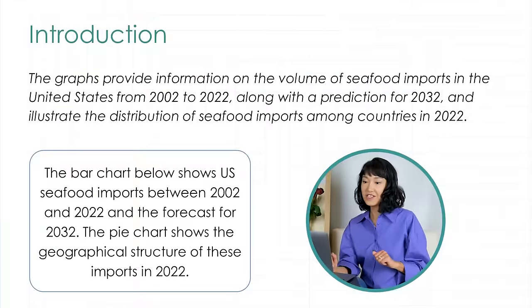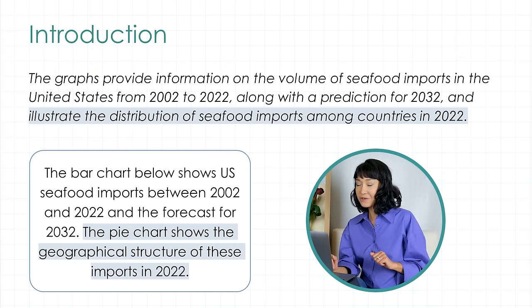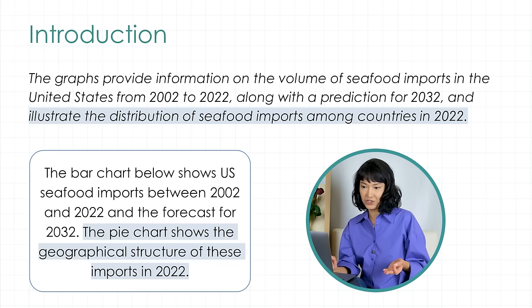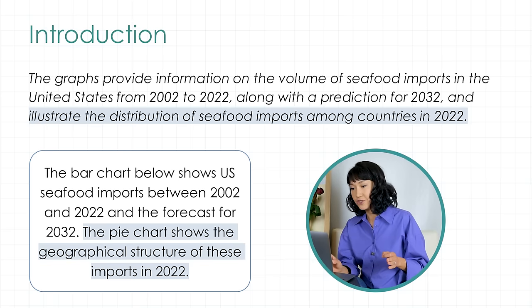Now the second. The task reads: 'the pie chart shows the geographical structure of these imports in 2022.' And I wrote: 'the graphs illustrate the distribution of seafood imports among countries.' So 'the geographical structure' becomes 'the distribution among countries.' In my introduction, I paraphrase the task sentences but kept the meaning. You can actually watch my in-depth lesson on how to write introductions from my paid course — this is a free preview, and I'll link it in the video description.